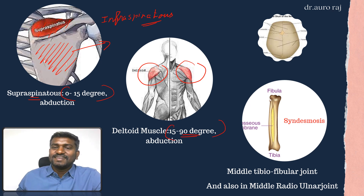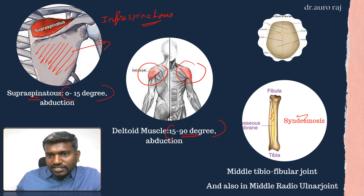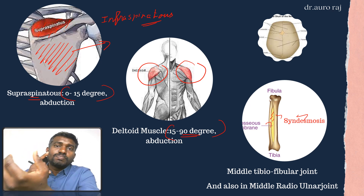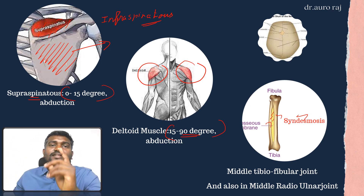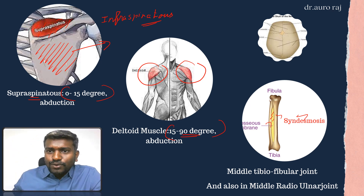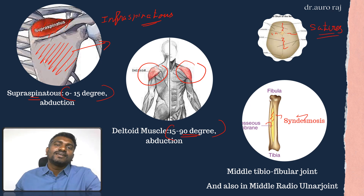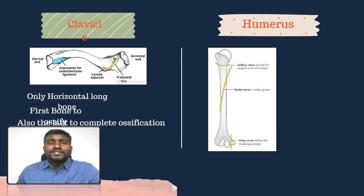The syndesmosis joint here is between the tibia and fibula — called the tibiofibular joint. A similar joint exists between the radius and ulna — called the middle radioulnar joint. The joints between skull bones are called sutures.